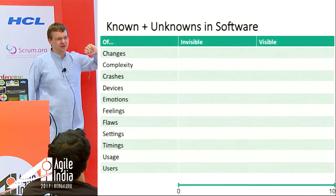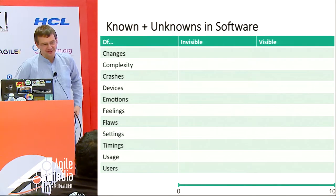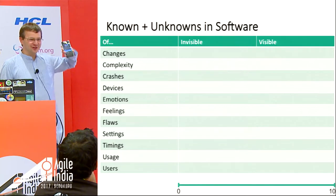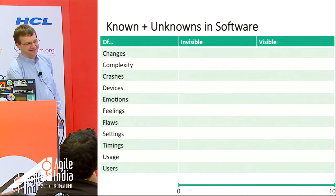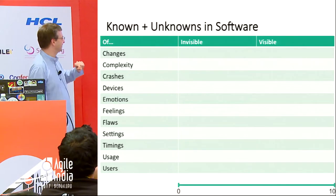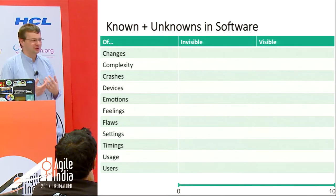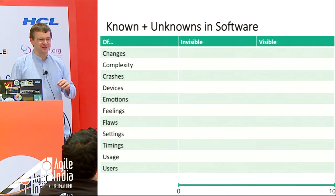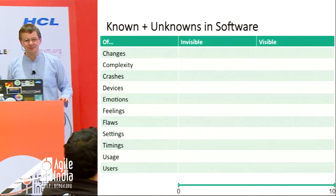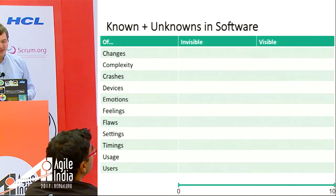Devices: you may have 10,000 different device models using your app, particularly for Android. Emotions about our users: are they pissed off with our software? Are they happy, enjoying it, going to recommend it? Feelings, flaws, and settings — because we may have our device in night mode. What does that mean for our software? Does it affect the usage?